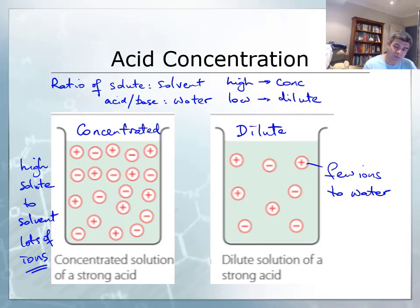In the one on the left, we have lots of ions in a certain volume of water. In the same volume of water on the right, there are much fewer ions.